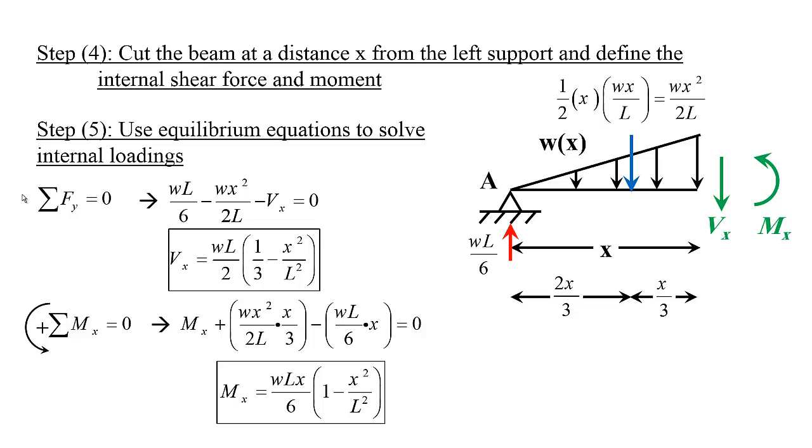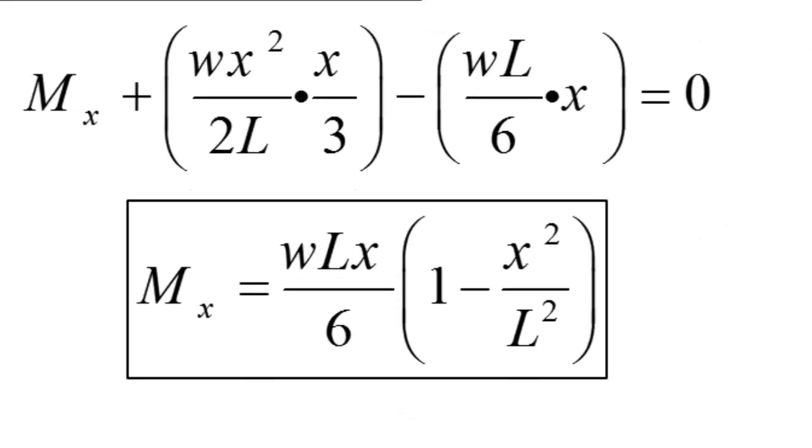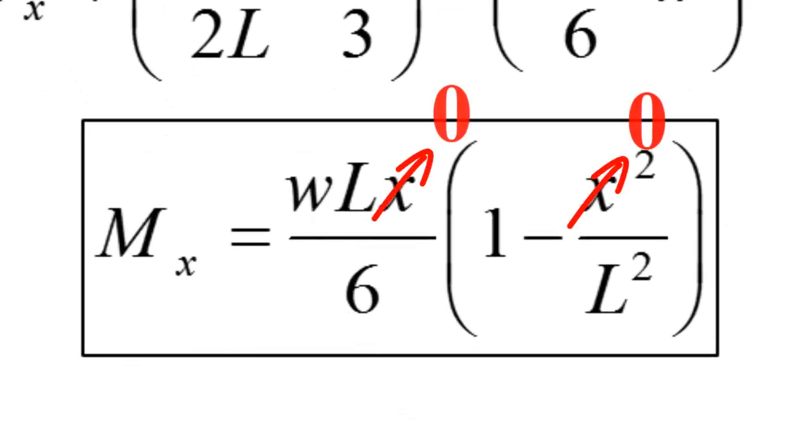Here's a quick check. We know if the support is a hinge or roller with no concentrated moment acting directly at the support, with any kind of loading in between for a beam, the moments at these end supports should be zero. If we assume X to be 0, that's at support A. If we substitute back into the MX equation, we can see that WL times 0 makes the whole expression zero, so MX is 0.